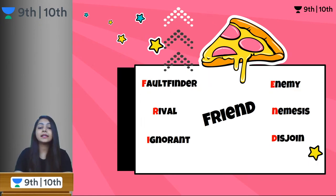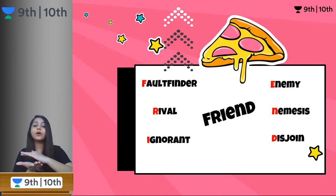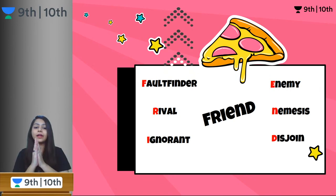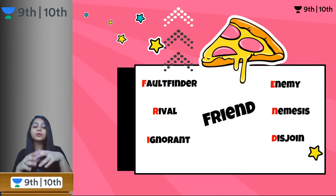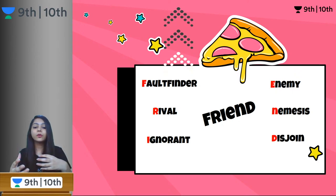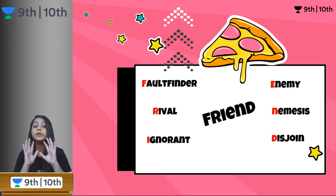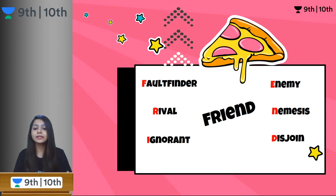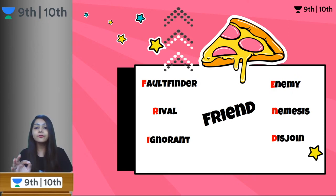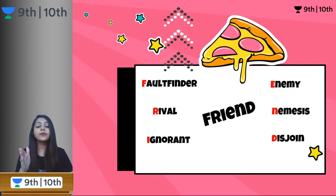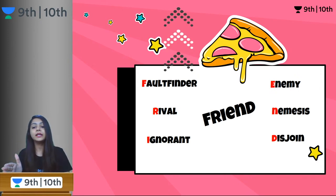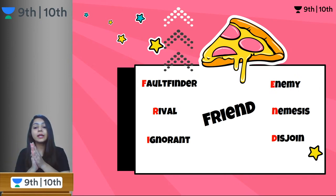Now let us go away from FRIEND — to people whom we would never call our friend. F for fault finder, R for rival, I for ignorance, E for enemy, N for nemesis, and D for disjoint.